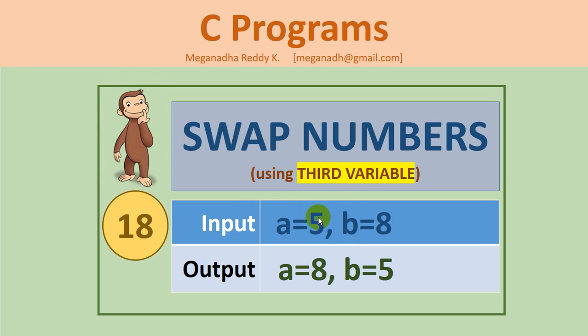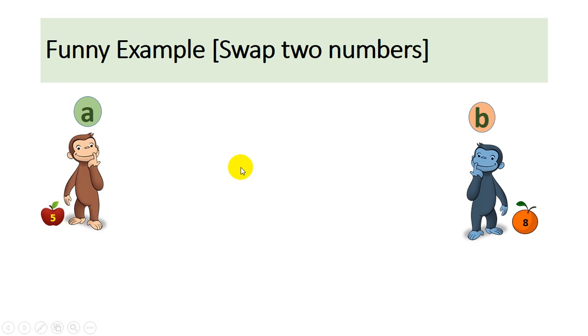Let's see some funny example first. So let's assume that there are two monkeys, monkey a and monkey b. Monkey a is having apple and I literally I'm representing this as variable a and data 5.